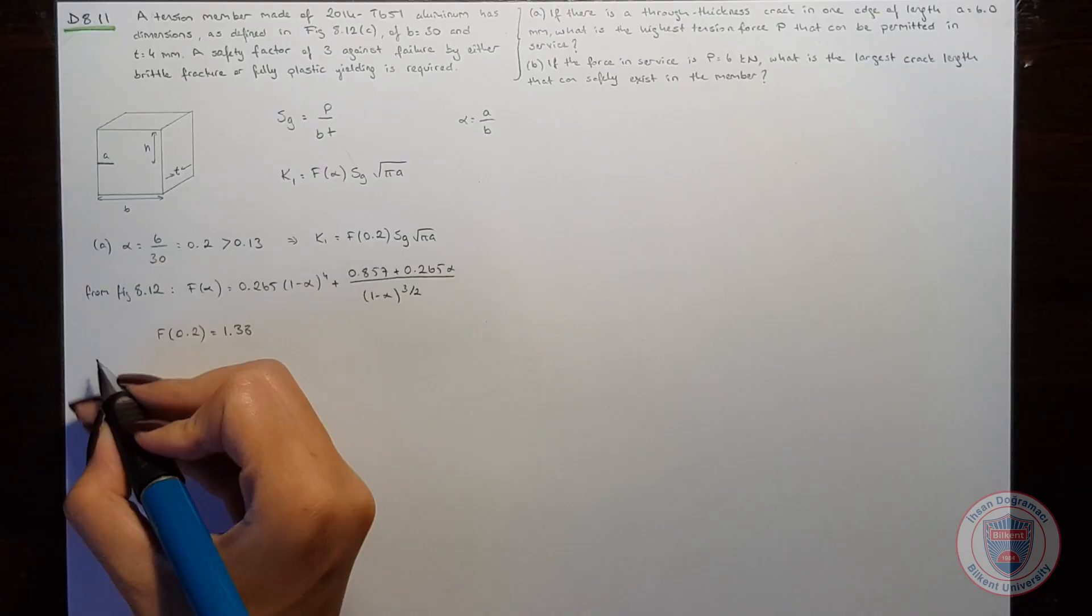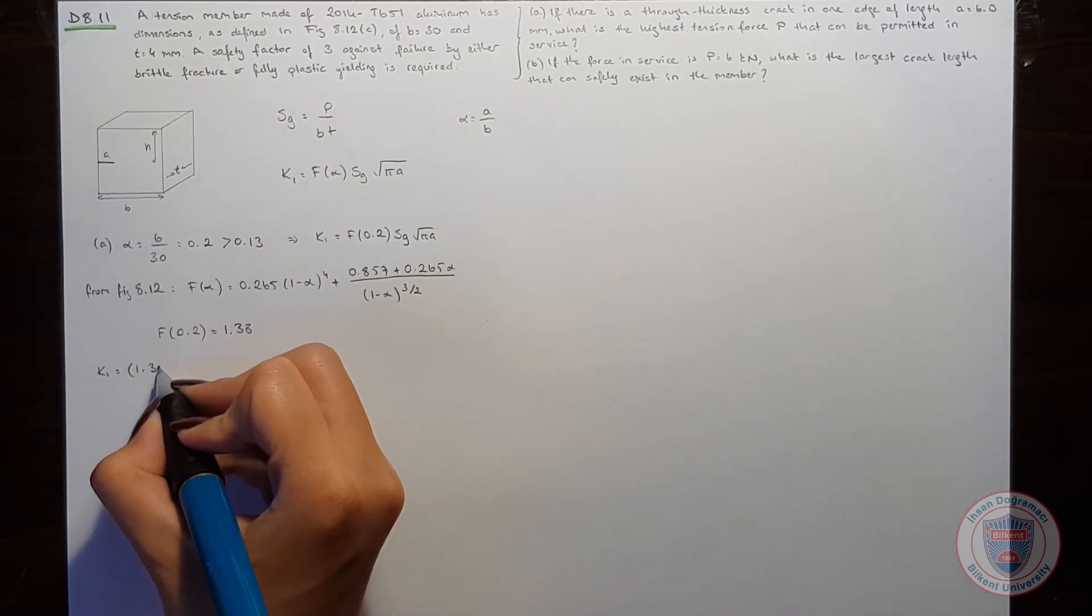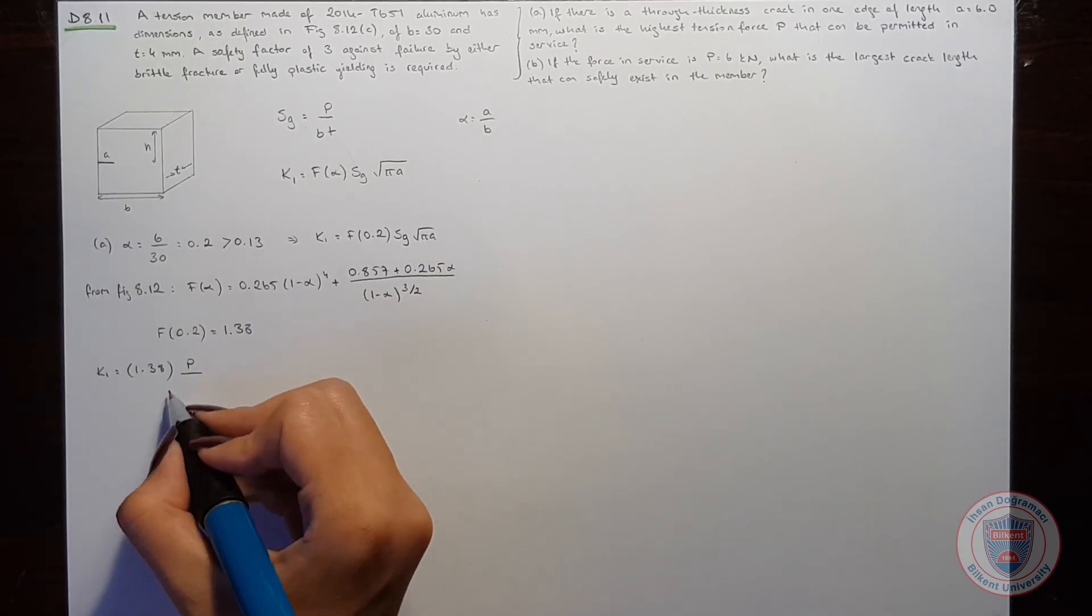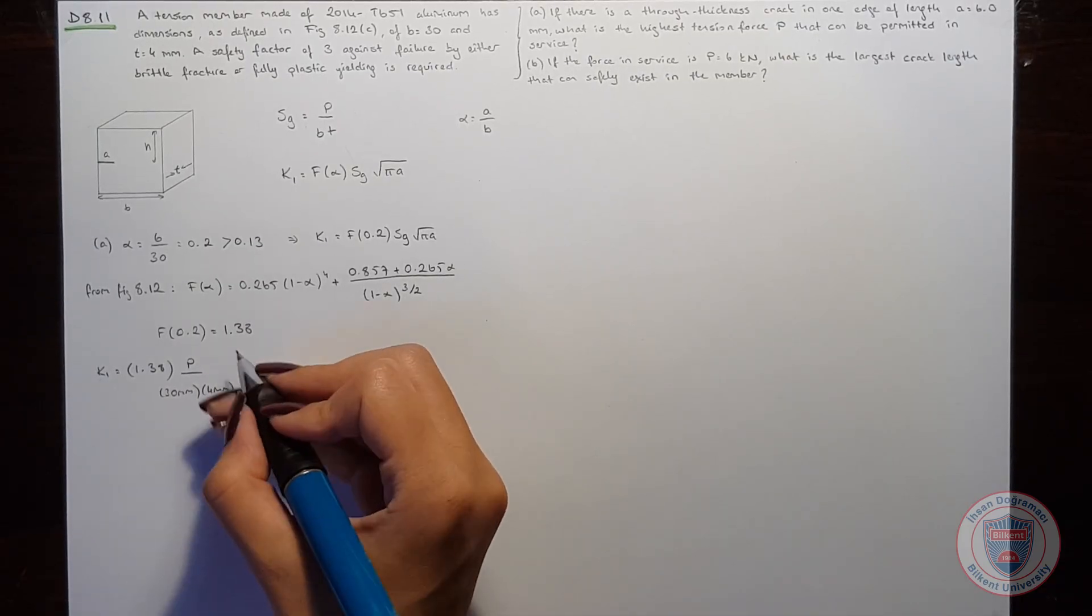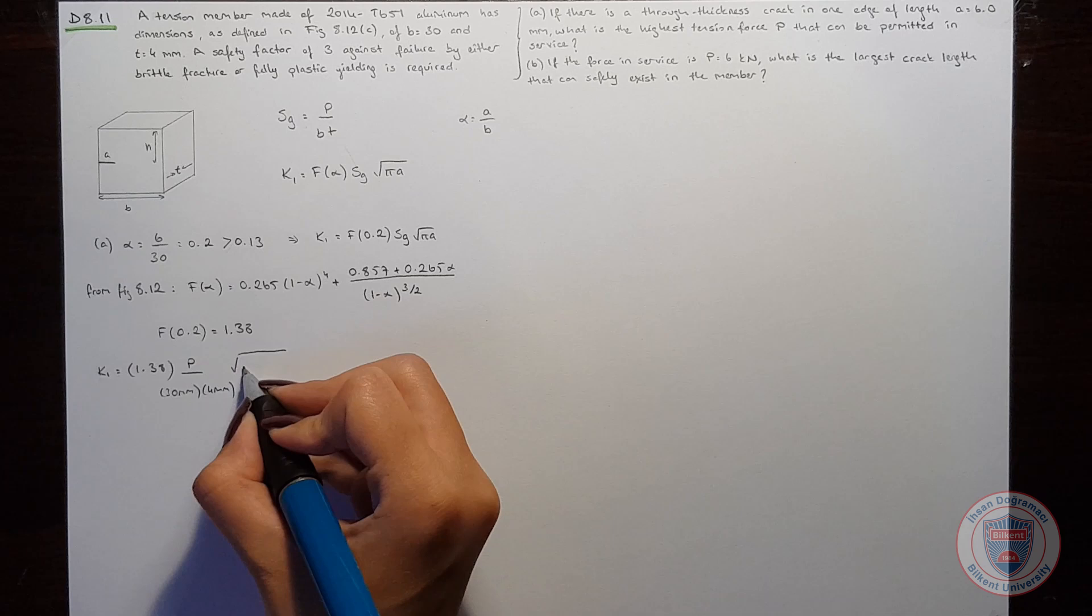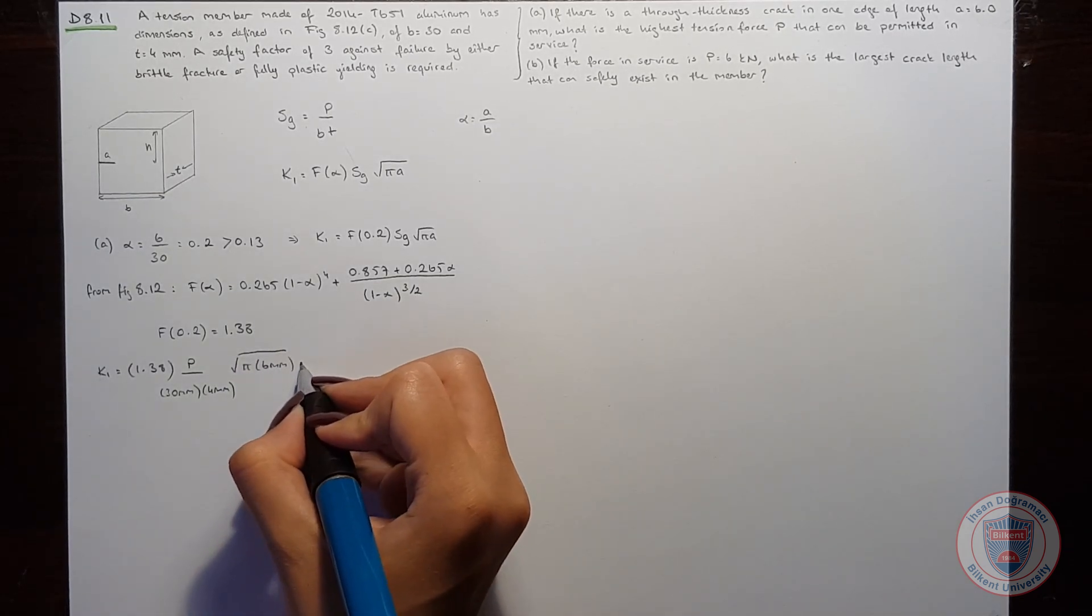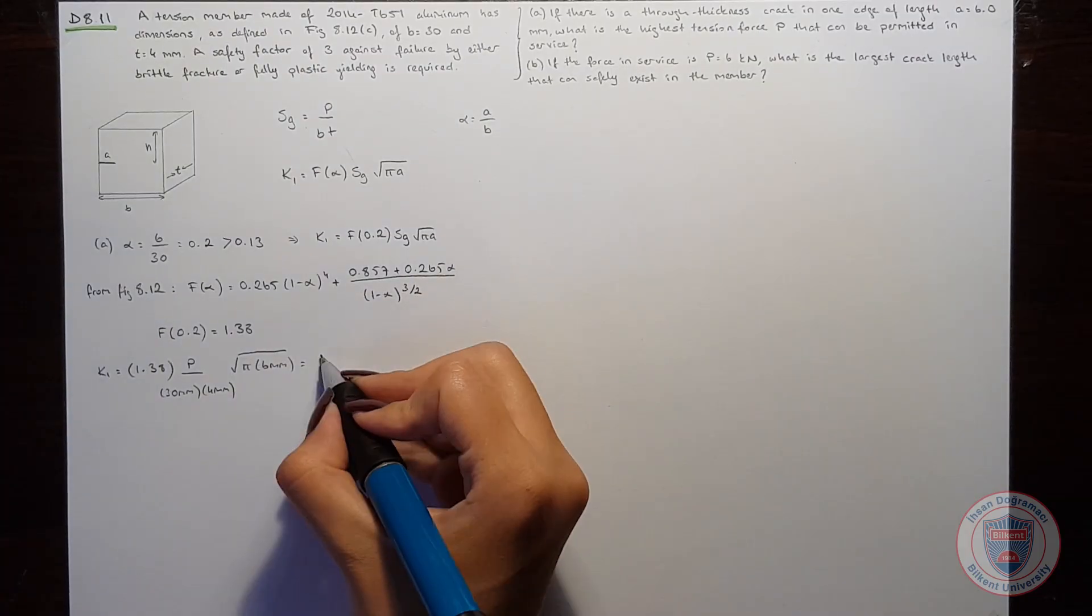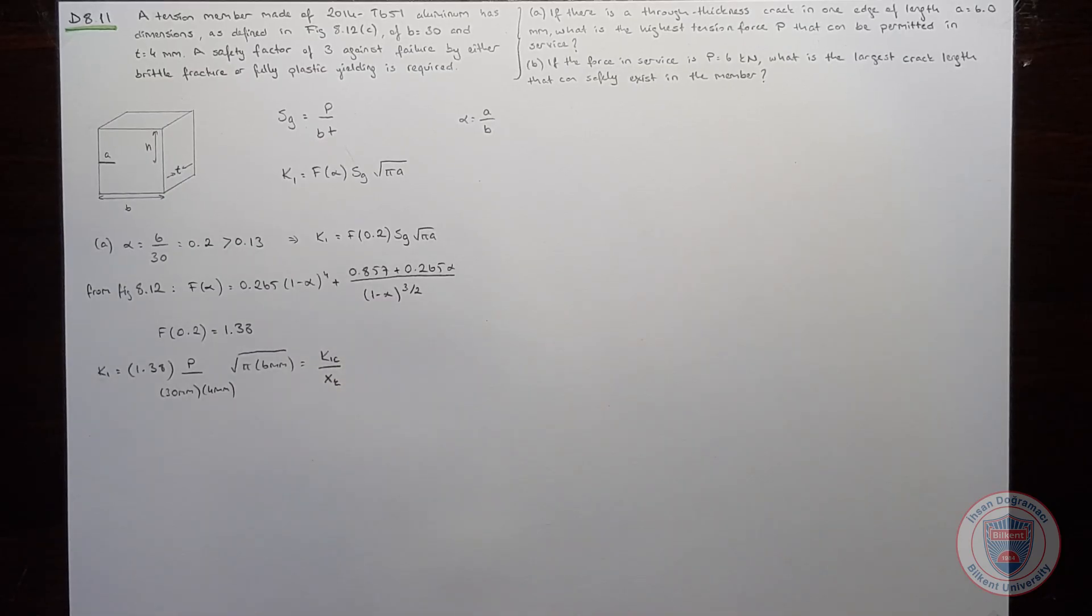So we can say that the stress intensity factor will be equal to 1.38 times the force over 30 mm times 4 mm times square root of pi times 6 mm. And this will be equal to the critical stress intensity factor over the safety factor.